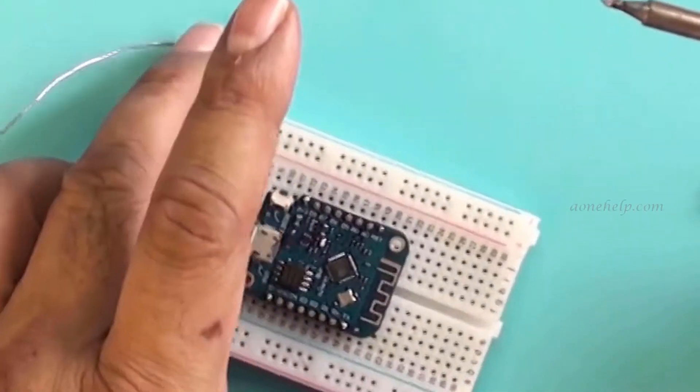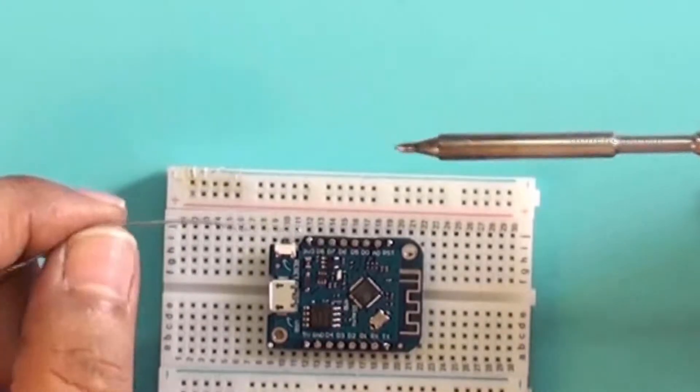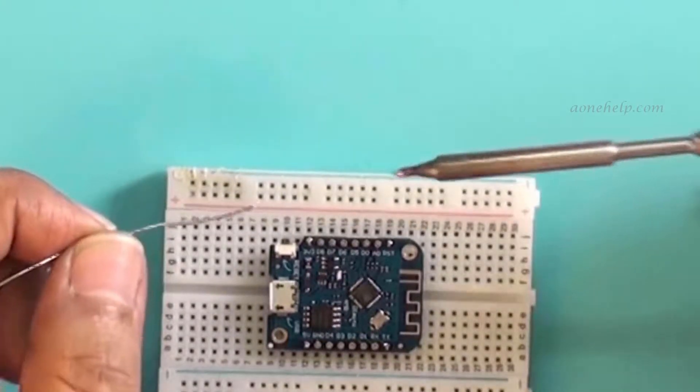Since we have soldered all four corner pins, we need not have to press the module during soldering. Now we can solder the rest of the pins one by one.